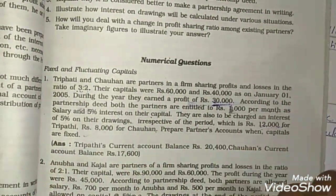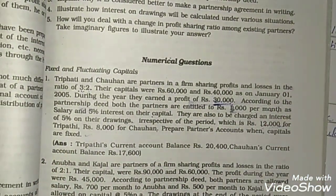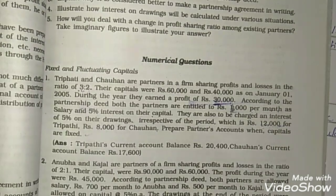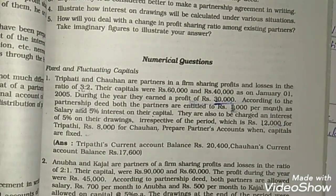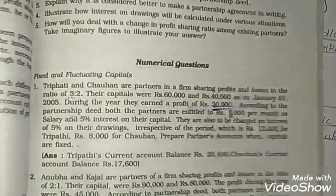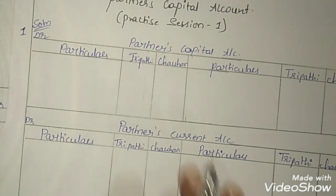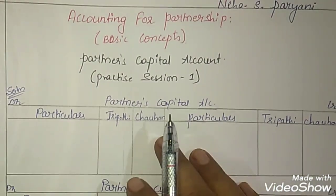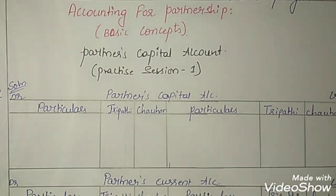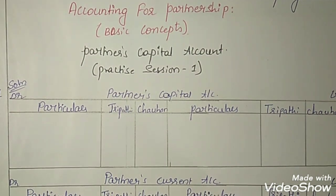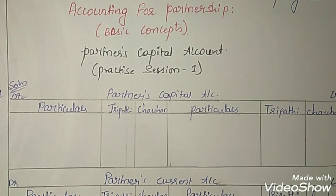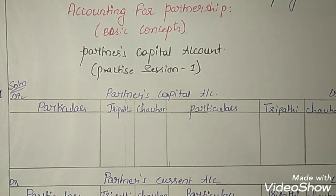There are two questions relating to the partners capital account given in your textbook. Let us solve both of them today. Before that, I would like to explain something about partners capital account. Partners capital accounts in the partnership firm can be maintained by two methods: the first one is the fixed capital method and the other one is the fluctuating capital method.